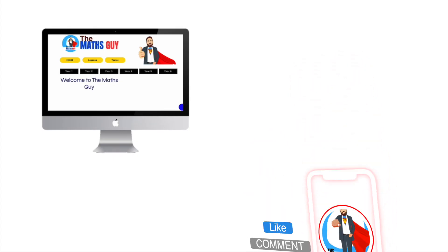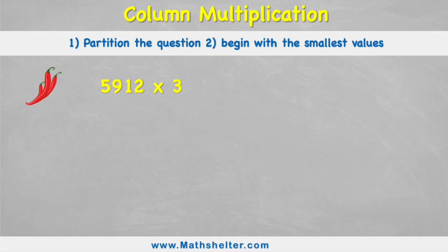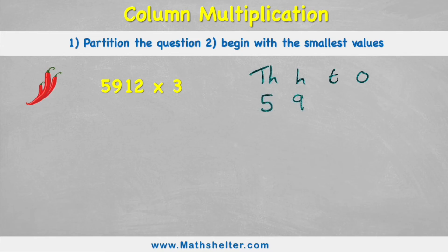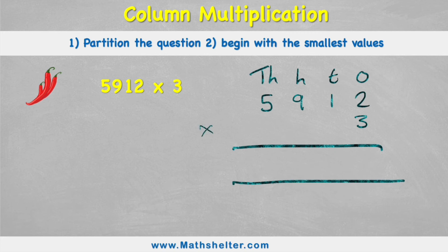Let's get back to the red chili challenge. The red chili challenge is 2,912 times three. I'm going to do exactly the same — put my ones, tens, hundreds, and thousands label. I can see that I have 2 thousands, 9 hundreds, 1 ten, and 2 ones, multiplied by 3 ones. Put my equals sign, and I'm ready to begin.